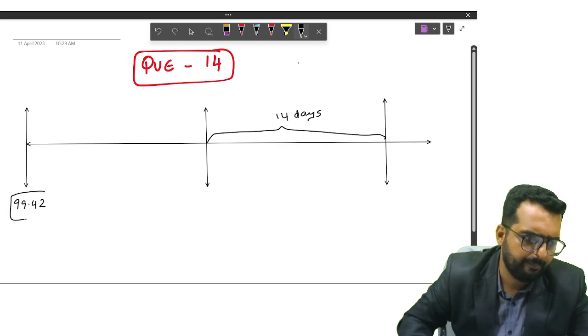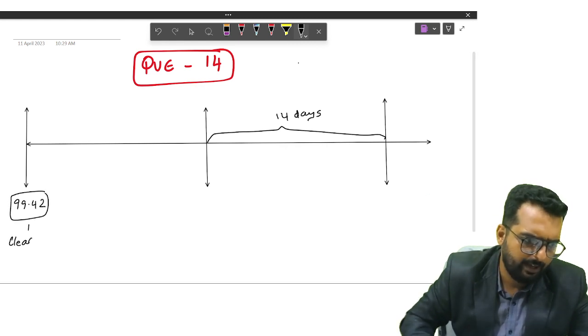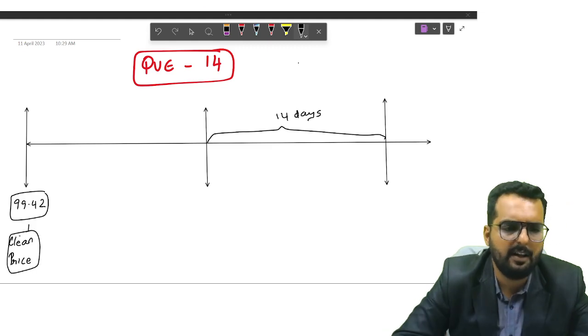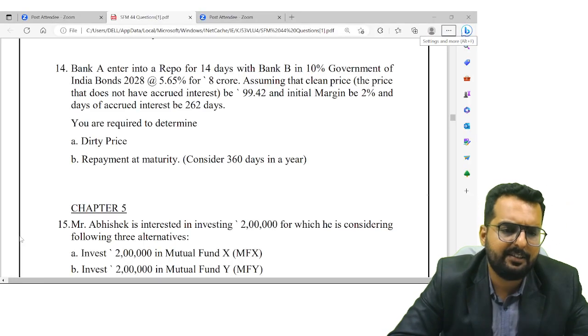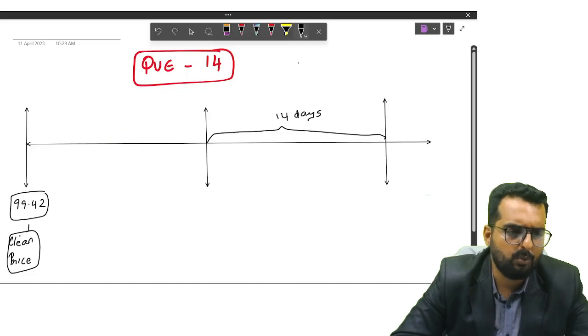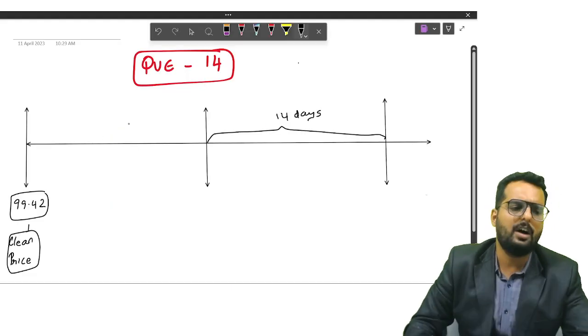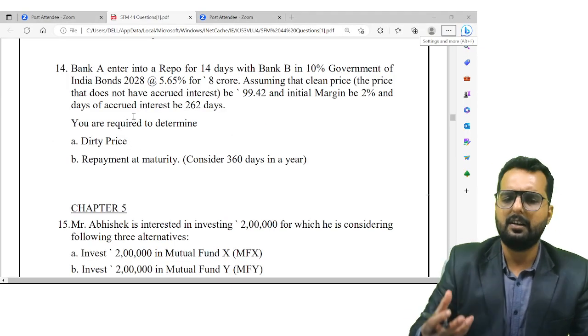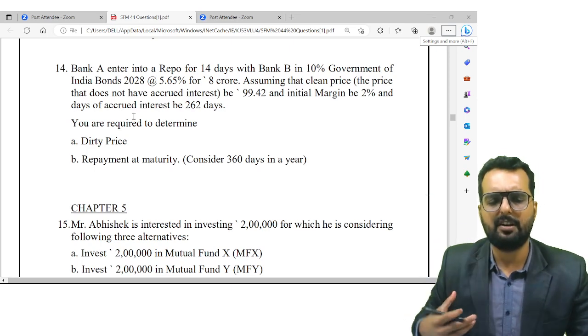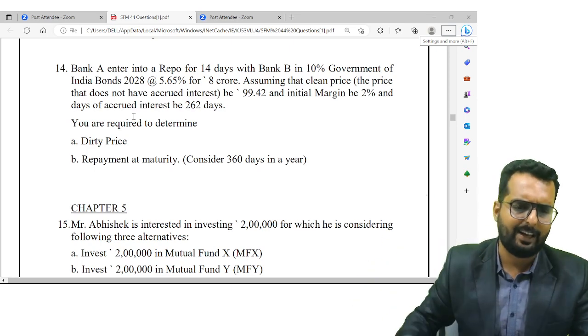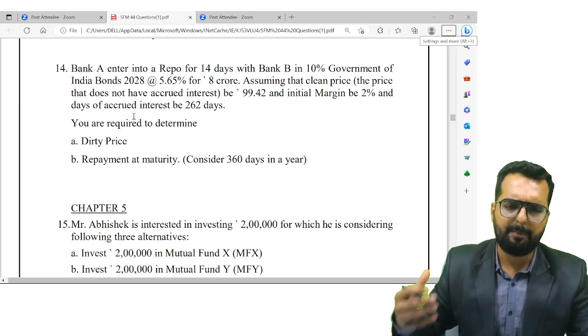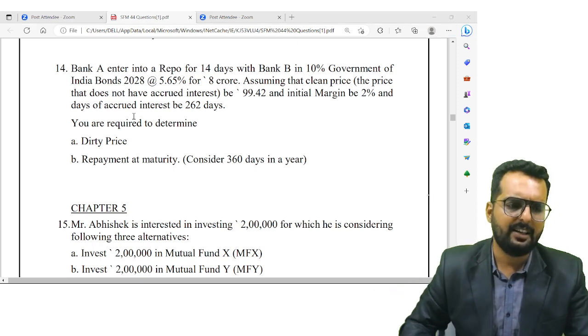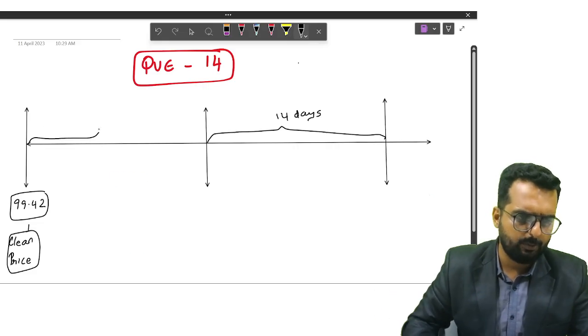And the initial margin is how much percentage? 2 percentage. Initial margin means basically the basic commission that the initial bank is going to take away from the second bank. So if the loan is 1 lakh, they will pay only 98,000. And the days of accrued interest is 262 days.